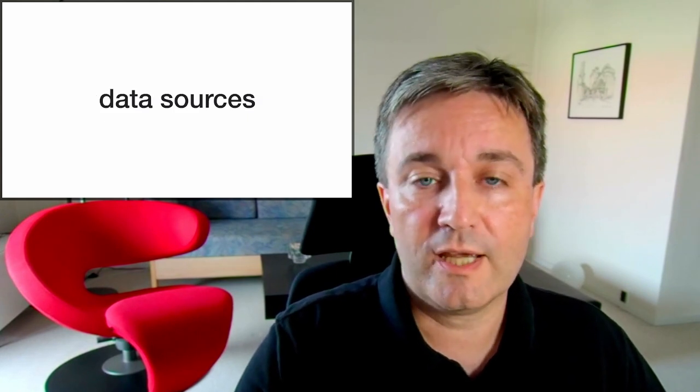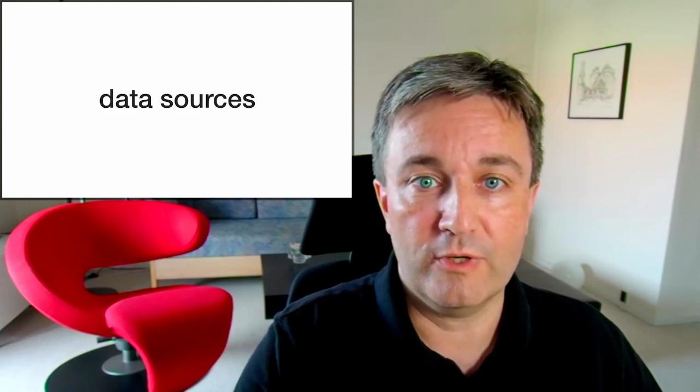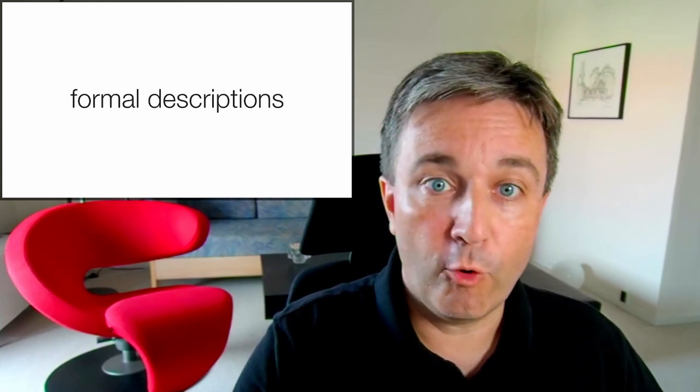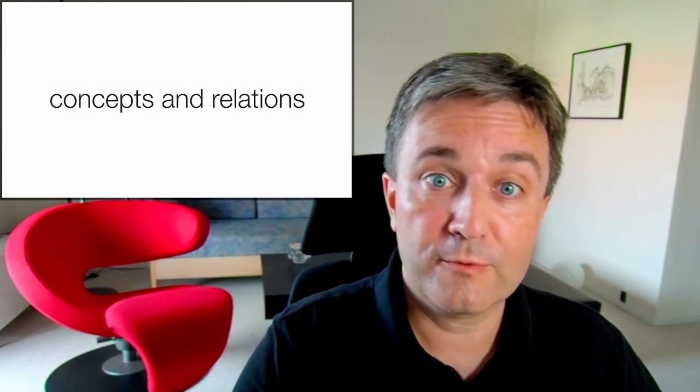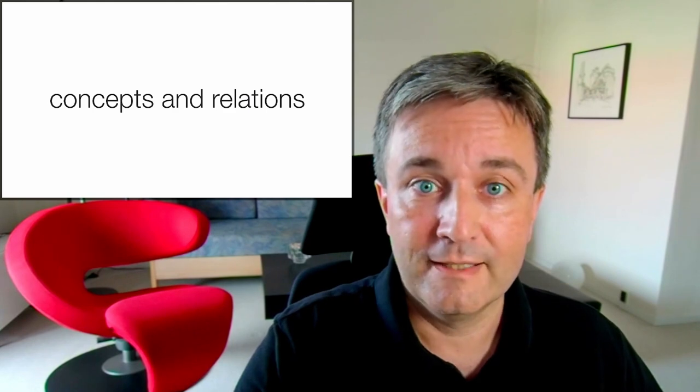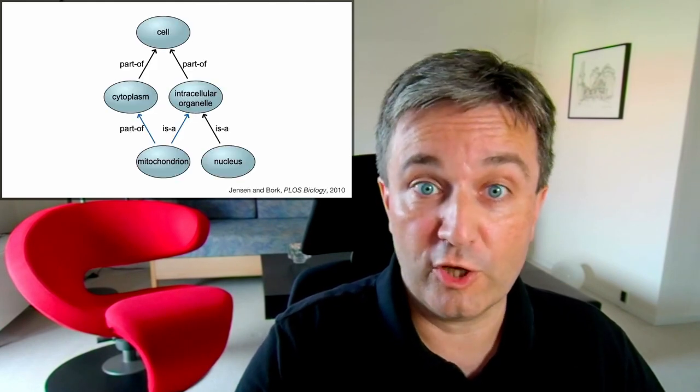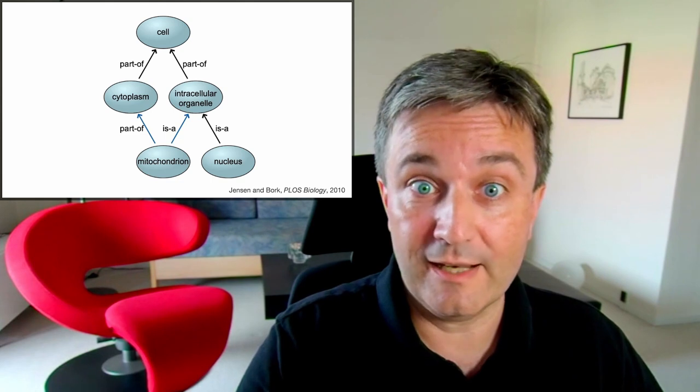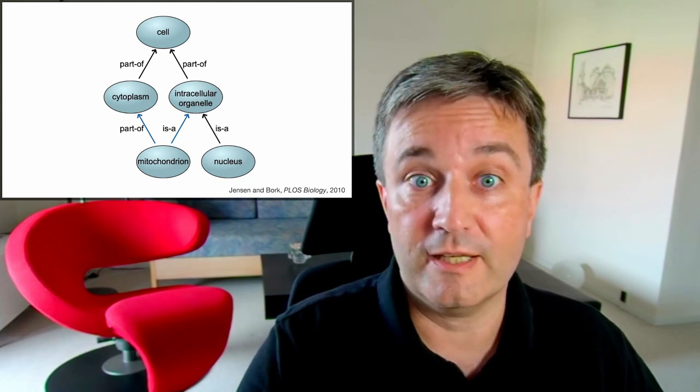There are two main types of data sources going into knowledge graphs. Ontologies, which contain formal descriptions of concepts and how they are related to each other. A good example of that is gene ontology, which, for example, has the structure of a cell in the form of concepts and relations.